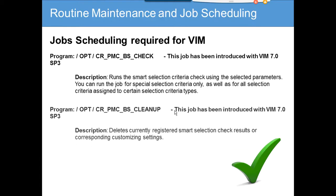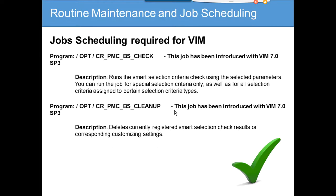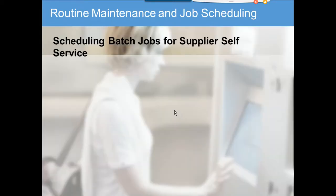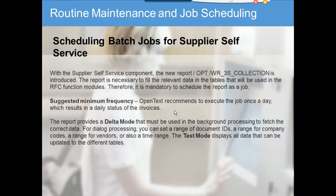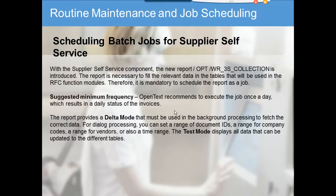Another job deletes currently registered smart selection check results or corresponding customizing settings. The next new addition is for Supplier Self-Service, where suppliers can query their invoices. Some jobs need to run for this — it's optional; you only need it if you have Supplier Self-Service configured.